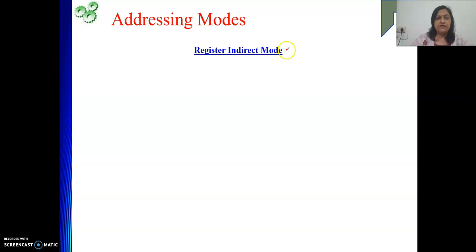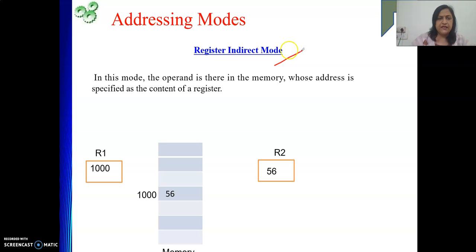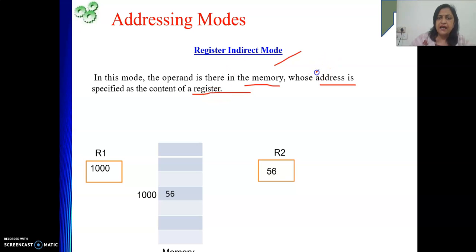Now I will be starting with another addressing mode, that is register indirect mode. In register indirect mode, your data will be there in memory, but the address will not be given directly as part of your instruction. Rather, it will be the content of a register. In this mode the operand is there in the memory, but its address we are not getting directly in the instruction. Instead, in the instruction you are going to get a register, and that register's content is the address of your operand. Register content is now not your operand — rather, it is the address of the operand.